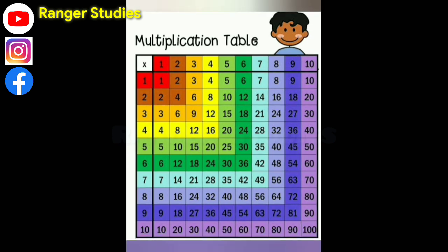7 1s are 7, 7 2s are 14, 7 3s are 21, 7 4s are 28, 7 5s are 25, 7 6s are 42, 7 7s are 49, 7 8s are 56, 7 9s are 63, 7 10s are 70.